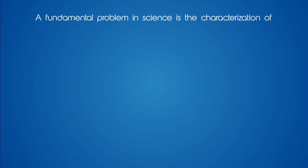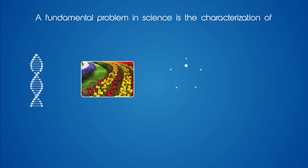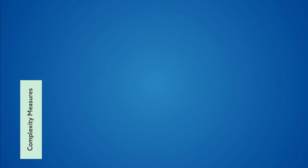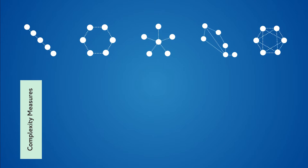A fundamental problem in science is the characterization of objects such as sequences, images, networks, and proteins. Complexity measures allow scientists to do some of these characterizations in a systematic way to better understand and even manipulate these objects.